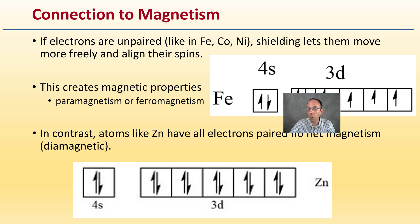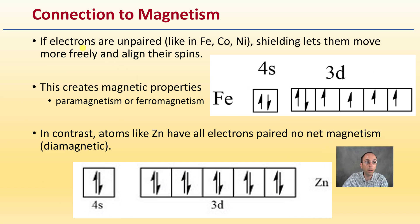Now, how does this relate to magnetism as the last part here? If electrons are unpaired, like in iron, cobalt, or nickel, shielding lets them move more freely and align their spins. This creates magnetic properties.